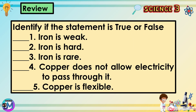Identify if the statement is true or false. 1. Iron is weak. 2. Iron is hard. 3. Iron is rare. 4. Copper does not allow electricity to pass through it. 5. Copper is flexible.